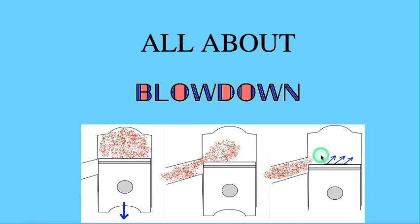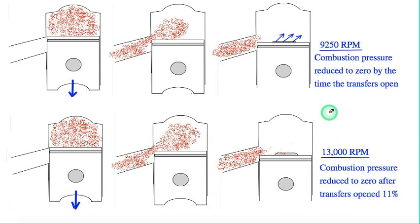But strangely enough, most engines are made, or at least race engines are made, so that the transfers are a little bit open when that pressure is finally relieved. In this case, looking at a KX100, the transfers are opened 11% when that pressure reduces.